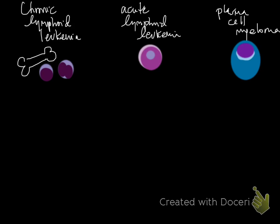The three types of lymphoproliferative diseases are chronic lymphoid leukemia, acute lymphoid leukemia, and plasma cell myeloma. Chronic lymphoid leukemia is often incidental, does not tend to cause cytopenias except maybe anemia of chronic disease, and early cases may be difficult to differentiate from a reactive lymphocytosis. One way to diagnose it is via flow cytometry on peripheral blood. The term 'chronic' referred to how long those patients tended to live.